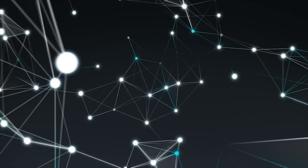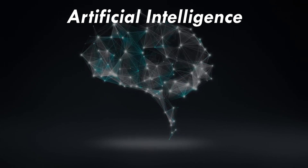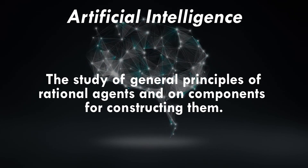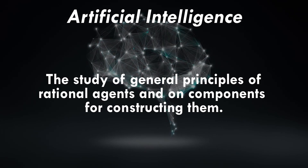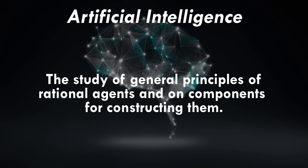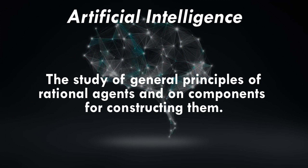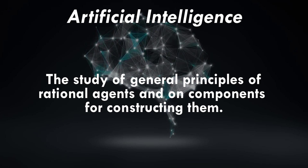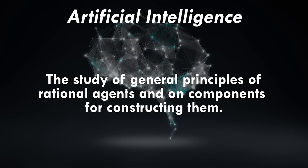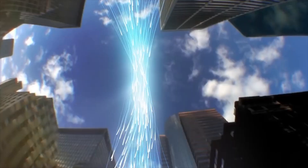Let's start with the definition of AI. Artificial intelligence is the study of general principles of rational agents and of components for constructing them. The key word here is rational. It's important to note that this definition deliberately avoids using human intelligence as a basis of direct comparison, since simple rationality is easier to assess.